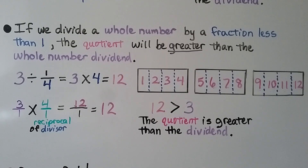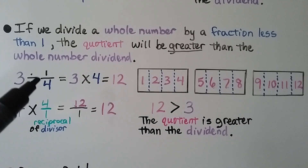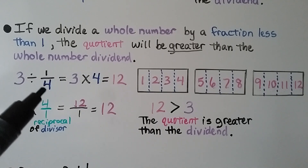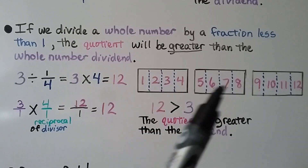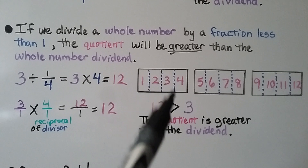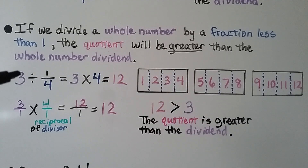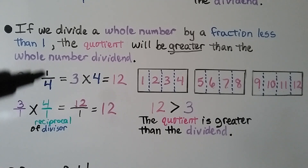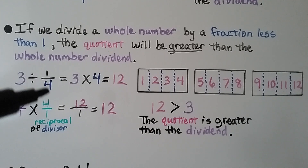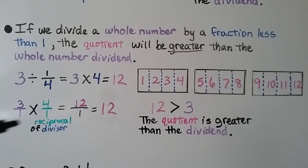If we divide a whole number by a fraction less than 1, the quotient will be greater than the whole number dividend. Our dividend is the whole number 3, divided by 1 fourth. We can multiply 3 by the denominator — 3 times 4 equals 12. Or we can write 3 as 3 over 1 and multiply by the reciprocal of the divisor, 4 over 1, to get 12 over 1, which simplifies to 12. The quotient, 12, is greater than the dividend, 3.